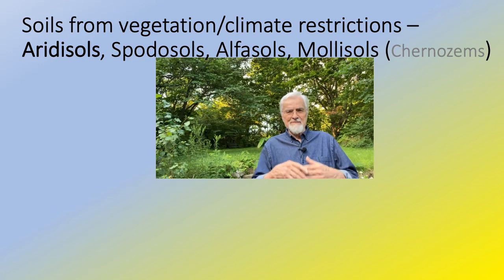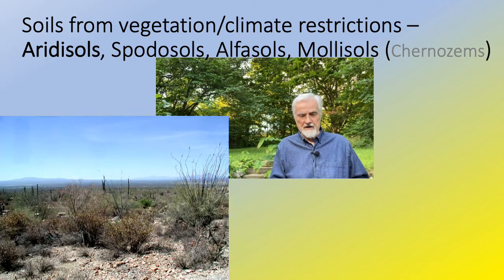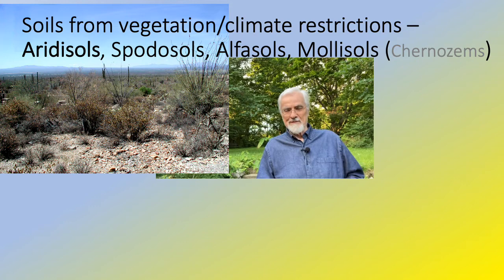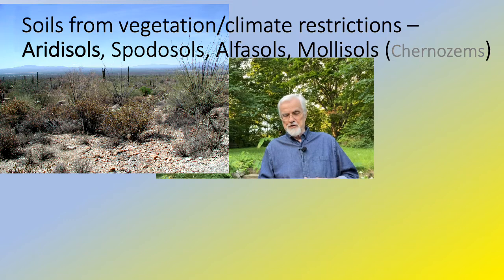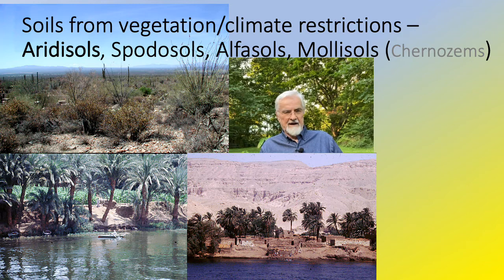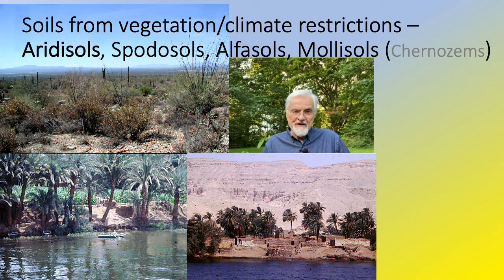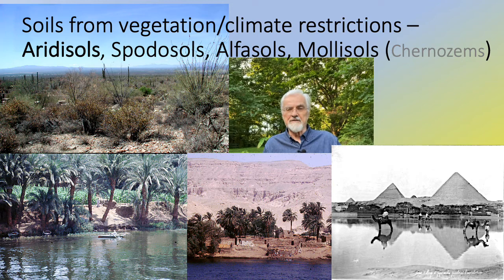Now we move to soil types defined mainly by vegetation and climate. The first are aridisols — desert soils. Aridisols are dry, usually formed on a sand basis, and surprisingly can be good for agriculture if water is available. The Egyptian Nile civilization was built on aridisols that were also alluvial, and the annual flooding of the Nile was critical. Moving away from the floodplain, agriculture on aridisols required irrigation.